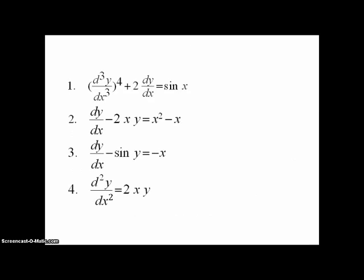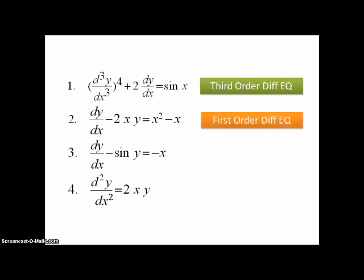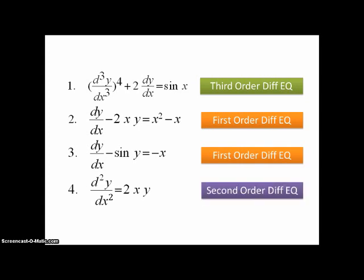Here are some examples of differential equations. The first one is called a third-order differential equation because it has a third derivative in it. The second one is called a first-order differential equation because it only has the first derivative in it. The fourth one is a second-order differential equation because it has a second derivative in it. We name it by the highest-numbered derivative that appears in the equation.